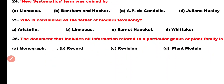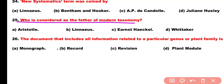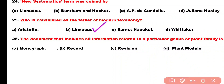Question number 25. Who is considered the father of modern taxonomy? Option A: Aristotle, Option B: Linnaeus, Option C: Ernest Haeckel, Option D: Whittaker. Correct answer is Option B. Carolus Linnaeus is considered the father of modern taxonomy as well as modern ecology.